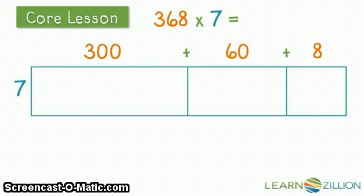Now we're going to write out the number sentence that shows the amount of each individual section. So our first has seven rows with 300 in each row, totaling 2,100. Our tens section has seven rows with 60 in each row, for a total of 420.